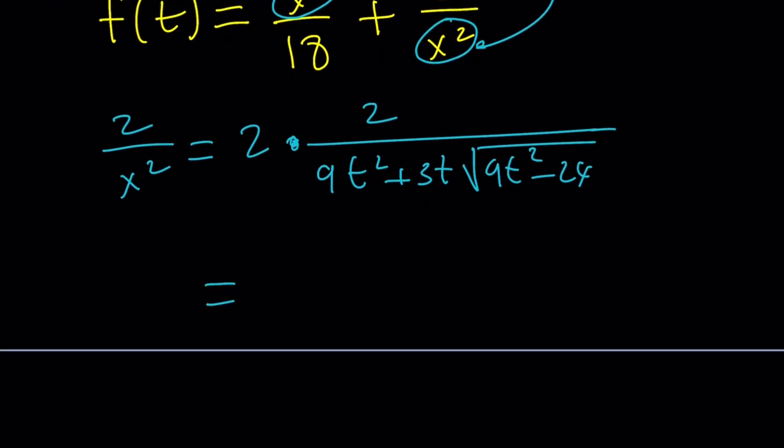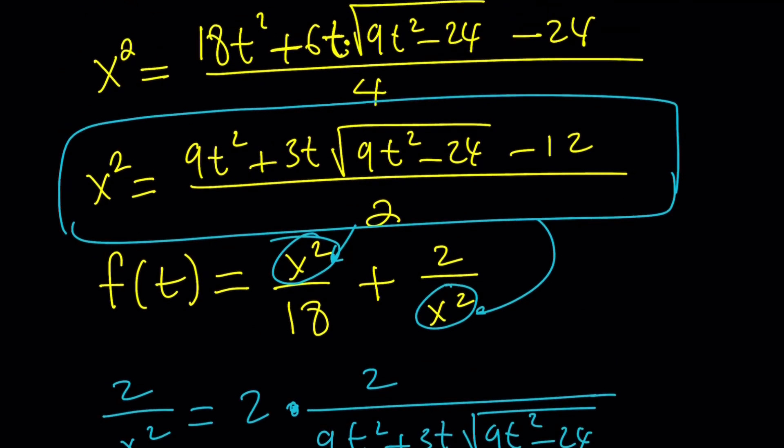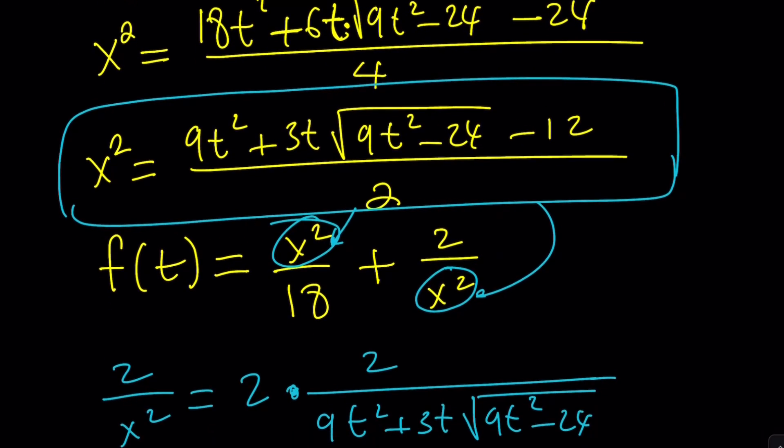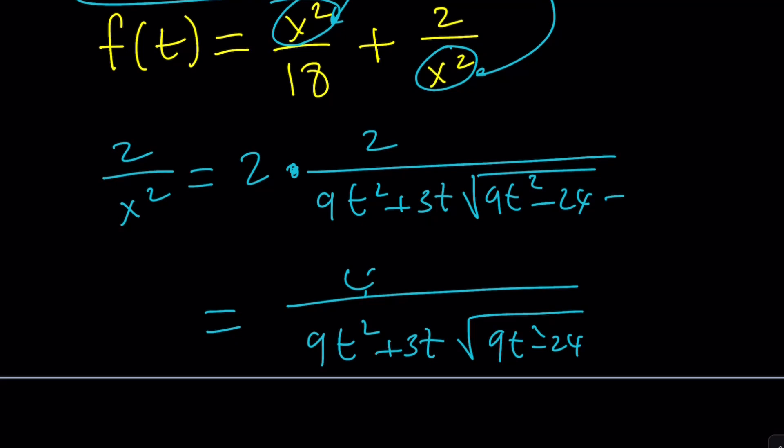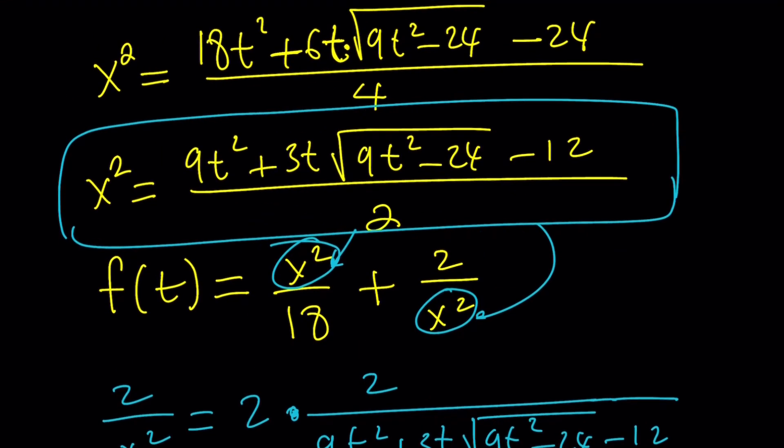So 2 over x squared is just going to be 2 times the reciprocal of x squared, which is 2 over 9t squared plus 3t times 9t squared minus 24. It's kind of painful, isn't it? That's why it's the first method. Anyways, we get a 4 here. So 4 over this radical. And at this point, you probably want to... And did I miss anything? Oh, yes. There's a minus 12 there, which I forgot to write. Minus 12, minus 12. Here we go. I knew the expression was a little longer.